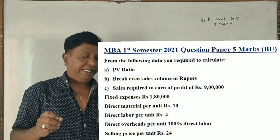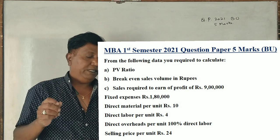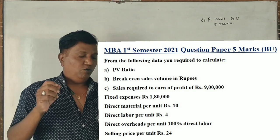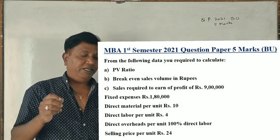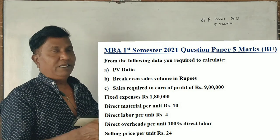Fixed expenses 1 lakh 80 thousand, direct material per unit Rs. 10, direct labor per unit Rs. 4, direct overheads per unit is 100% of direct labor, selling price per unit is 24 rupees.